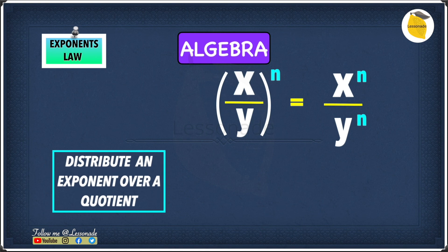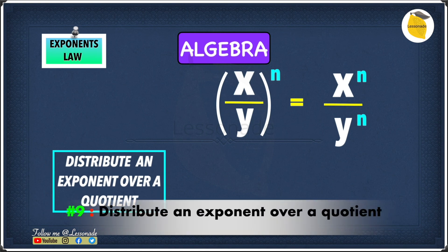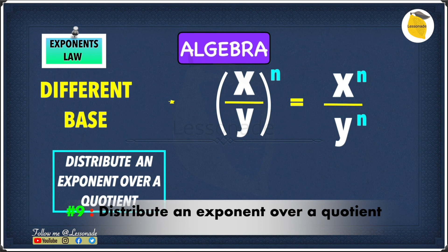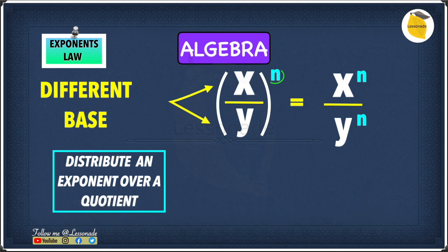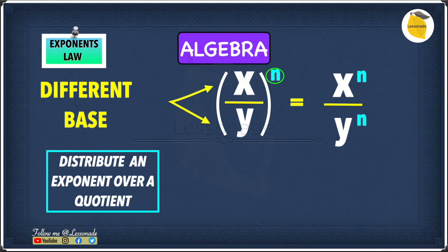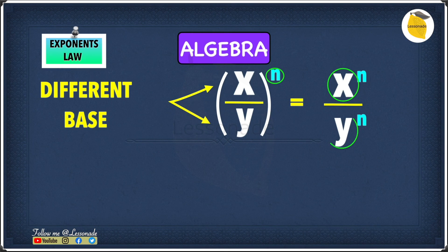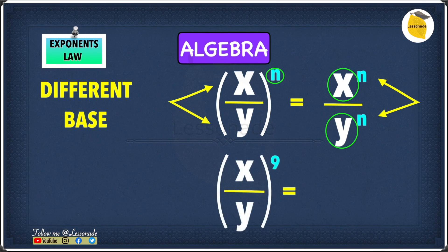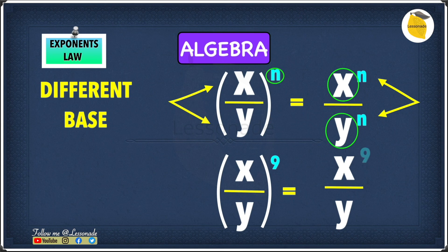The next rule is called distributing an exponent over a quotient. When you have different bases raised to the same power, you keep the bases as they are and raise each one individually to that power. For example, x over y to the power of 9: raise x and y each to the power of 9, giving x to the power of 9 divided by y to the power of 9.